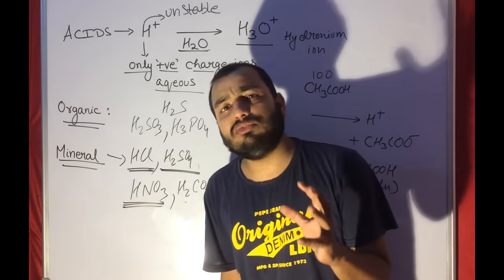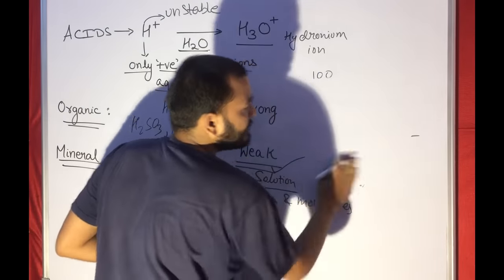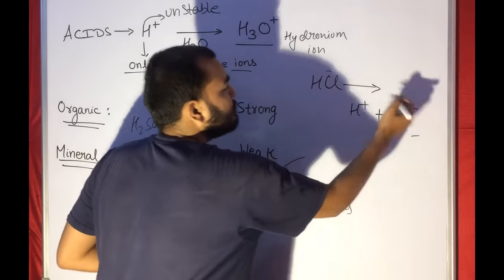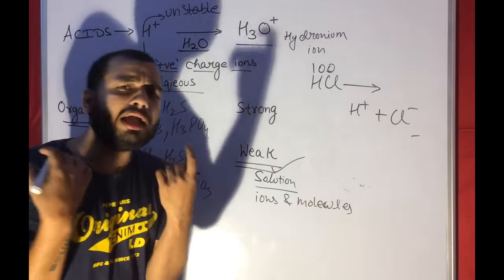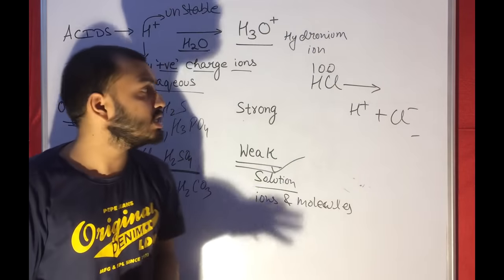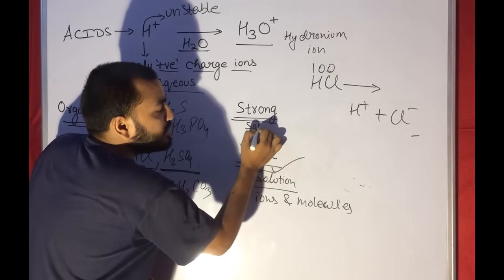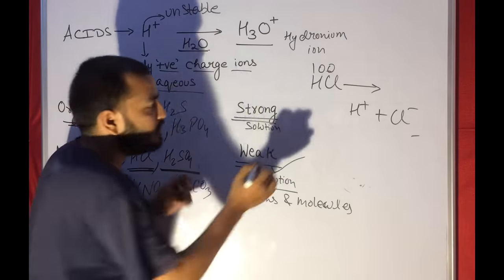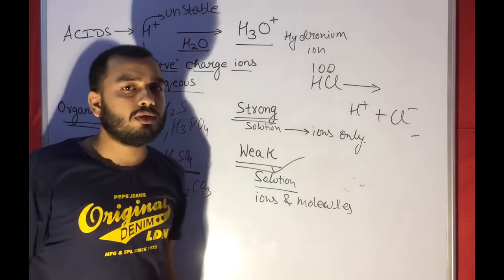Mineral acids are generally very strong. If I take a solution of HCl, it will furnish too much H+ ion and too much Cl−. If I take 100 molecules of HCl, all 100 molecules will change into H+ and Cl− — no molecule will remain as such in the aqueous solution. So a solution of a strong acid will contain ions only, because it ionizes completely.